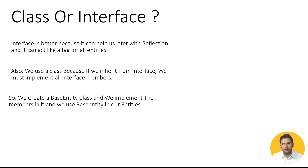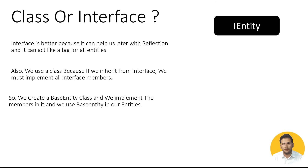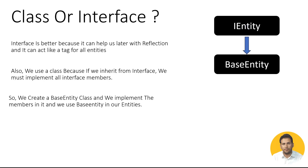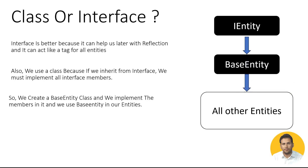Here is the schematic: we have an interface named IEntity, and we create a class named BaseEntity that inherits from IEntity and implements all IEntity members. Then in all the other entities we inherit from BaseEntity, and the problem is solved. Let's go and implement this and refactor our project to use IEntity and BaseEntity.